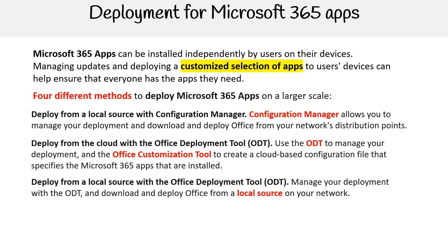The next method is to deploy from a local source with the Office Deployment Tool. With this method, you manage your deployment with the ODT and download and deploy Office from a local source on your network.